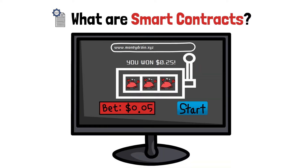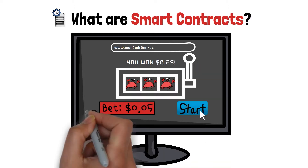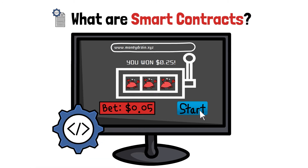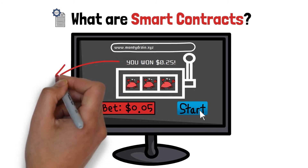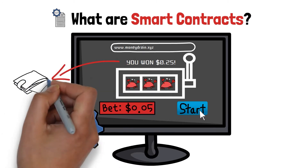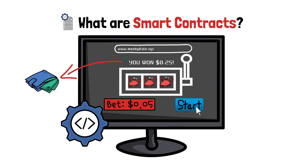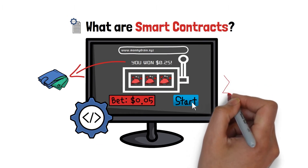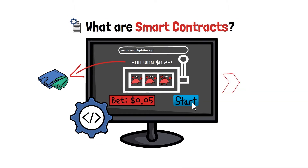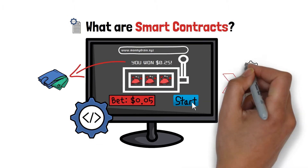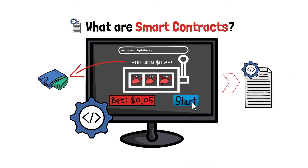In other words, once you initiate the slot machine, the process happens automatically, and, depending on the outcome, rewards are paid out automatically as well. This is actually exactly how smart contracts function.